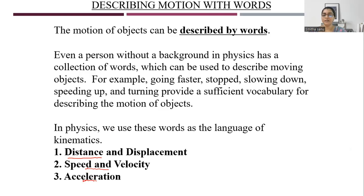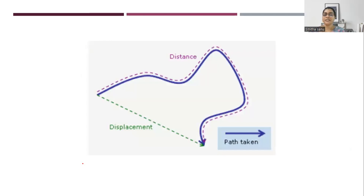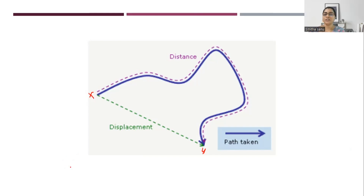Let's revise these concepts again. To understand distance, we can see this diagram. Distance is nothing but the length of the actual path taken. So if there is a person at X and he reaches Y by following the longest path — the blue path — then that length is called distance. While the shortest route that connects X and Y is called displacement.